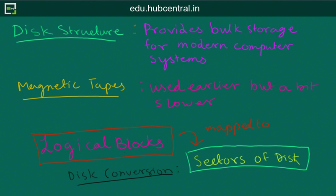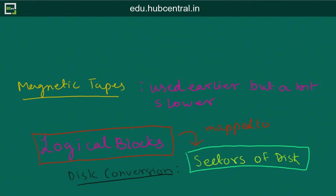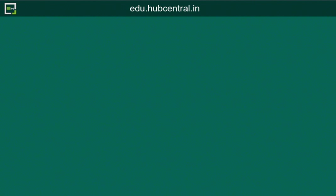In this video we will learn about disk conversion — the algorithms used to write on the disk. Disk conversion is basically the conversion of logical blocks. Information is stored in logical blocks, which are found in primary storage (the RAM), and those logical blocks are mapped to sectors of the disk. This mapping is called disk conversion.